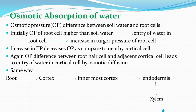This increased turgor pressure in the root cell leads to a decrease in osmotic pressure of the root cell. Due to this decrease in osmotic pressure, when we compare the osmotic pressure of the root cell with the nearby cortical cell, there is formation of a potential difference. The root cell now has less osmotic pressure compared to the cortical cell, so there is movement of water molecules from the root cell to the cortical cell.